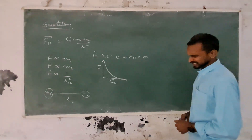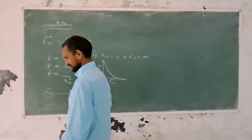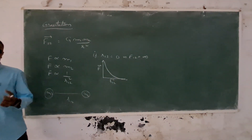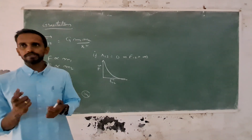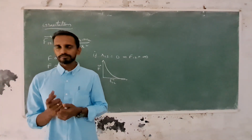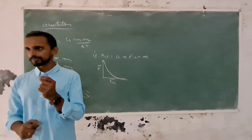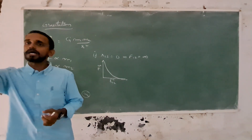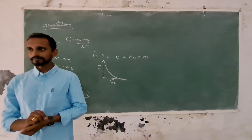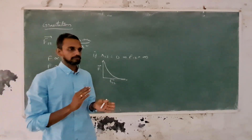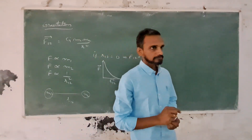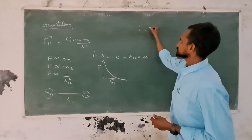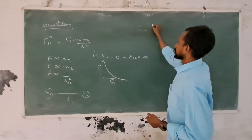Let's take a simple example. We have a simple example. What is the force between them? This is a simple calibration. G is a constant number.